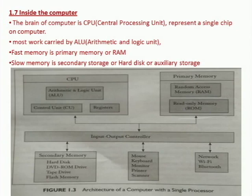In the CPU, which are the parts? Arithmetic and logic unit — ALU. Next is a control unit, and registers. In the primary memory: random access memory — RAM — and read-only memory — ROM. That is in the primary memory. In the secondary memory: hard disk, DVD, ROM drive, tape drives, flash memory. These are the parts.